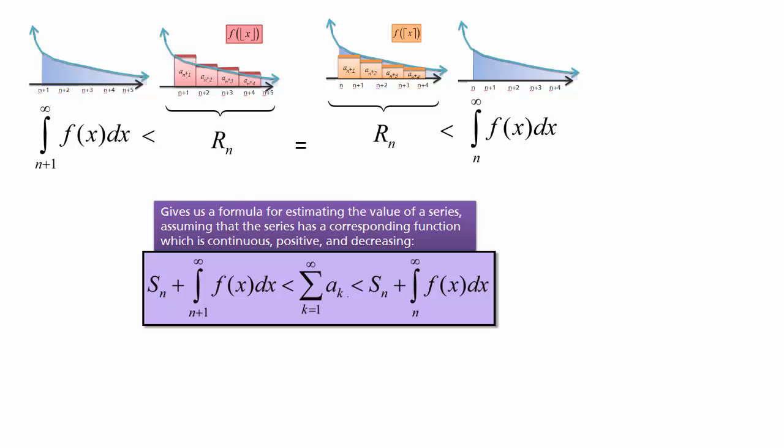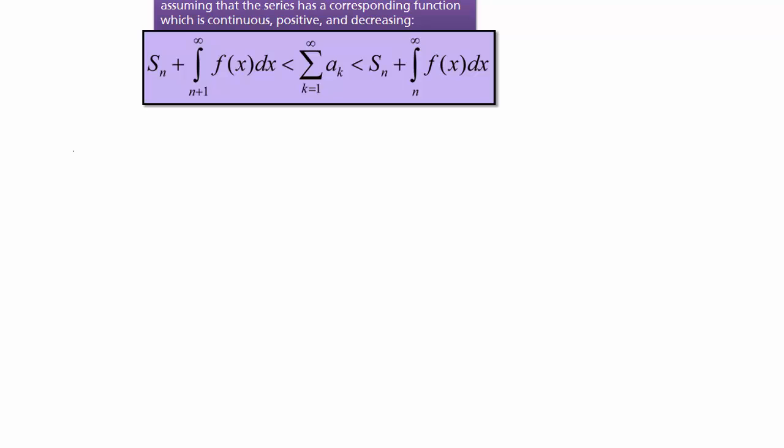So let's look at the following problem. We want to consider the sum, k goes from 1 to infinity of 1 over k to the fourth. So we have a corresponding function f of x equals 1 over x to the fourth. Now we need to check that this function is continuous, positive, and decreasing if we want to try to estimate it with our formula.